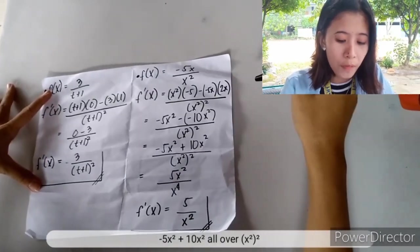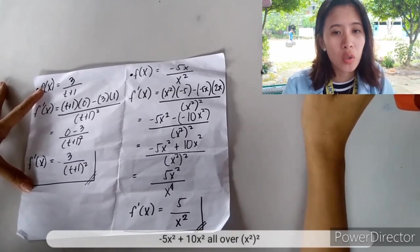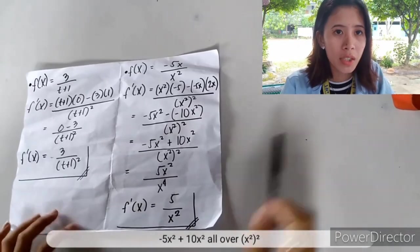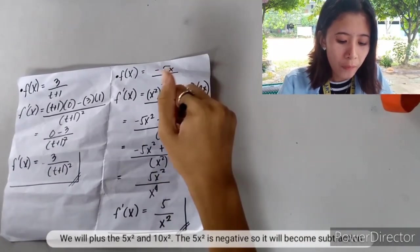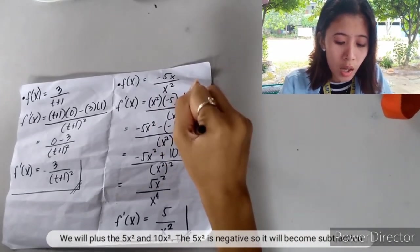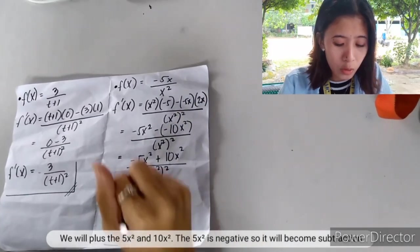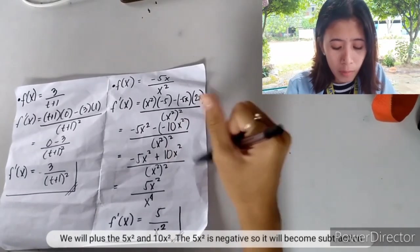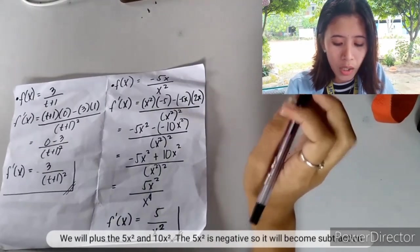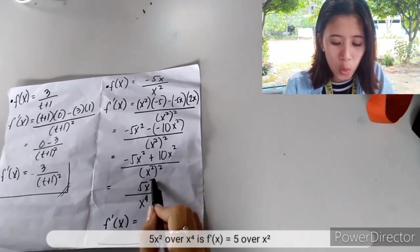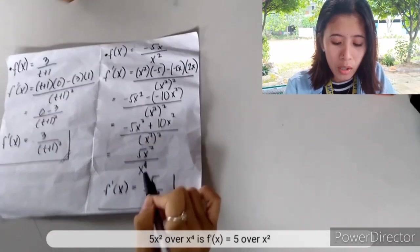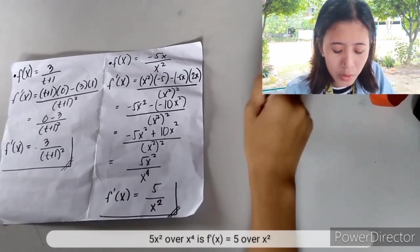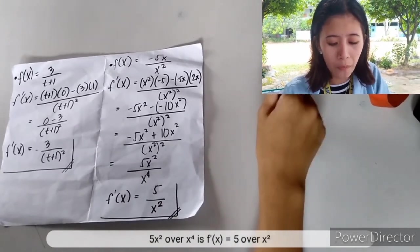For the next quotient rule example, we have negative 5x squared plus 10x squared over x squared squared. Since 5x squared is negative, we subtract: the result simplifies to 5x squared over x to the power of 4, giving f prime(x) equals 5 over x squared.